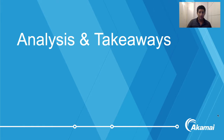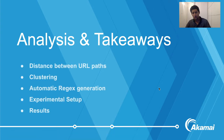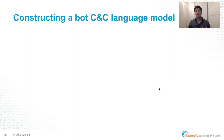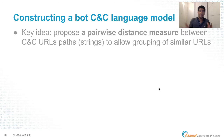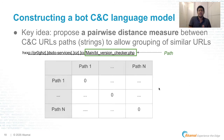Thanks Asaf for presenting the first part. Hi everyone, I'm Jordan. Here we're going to dive more into the technical details. We'll cover the distance between URL paths, the clustering, the regex generation, the setup, and the results. So let's start with the distance we use between URL paths. The idea is to build a distance between paths — what I mean by path is the last part of the URL, what is located after the domain. Basically we need to fit a symmetric matrix, where the diagonal is zero.